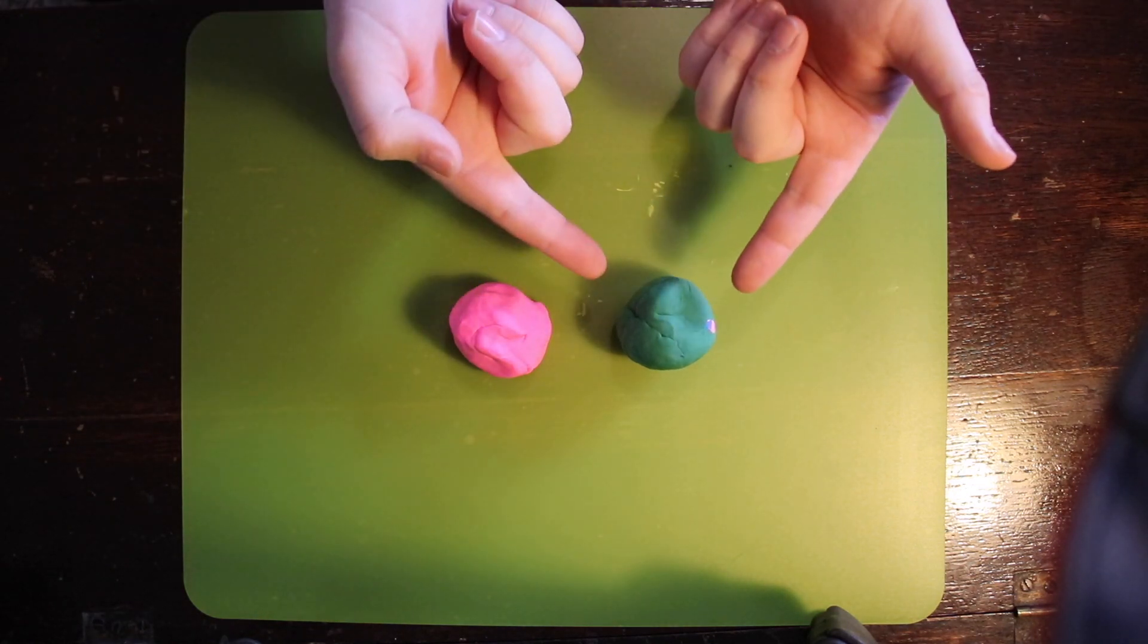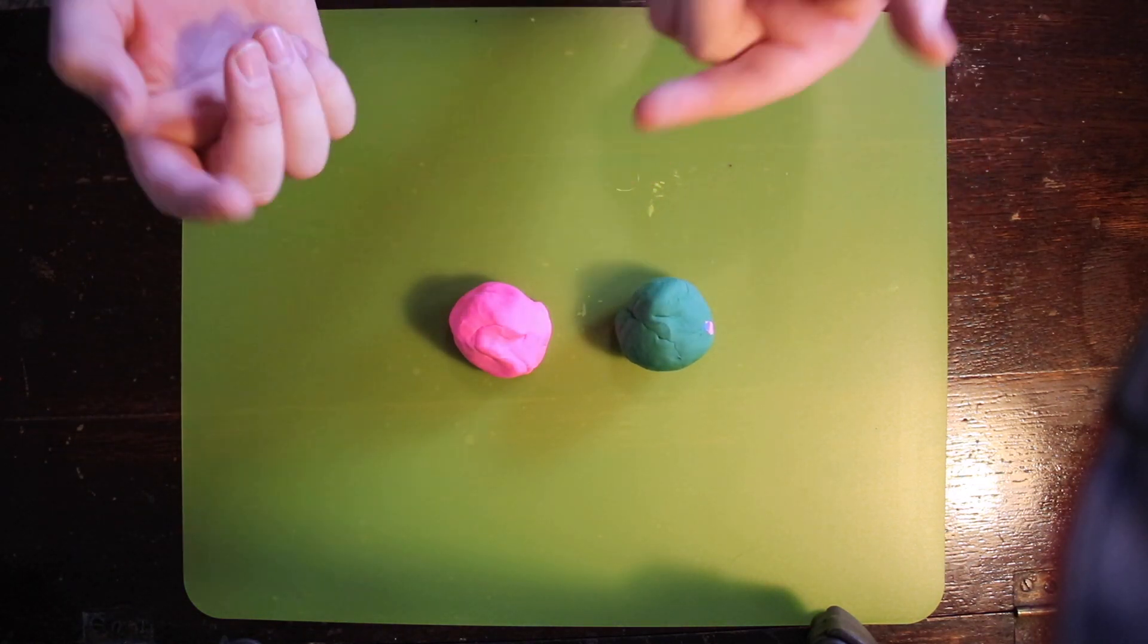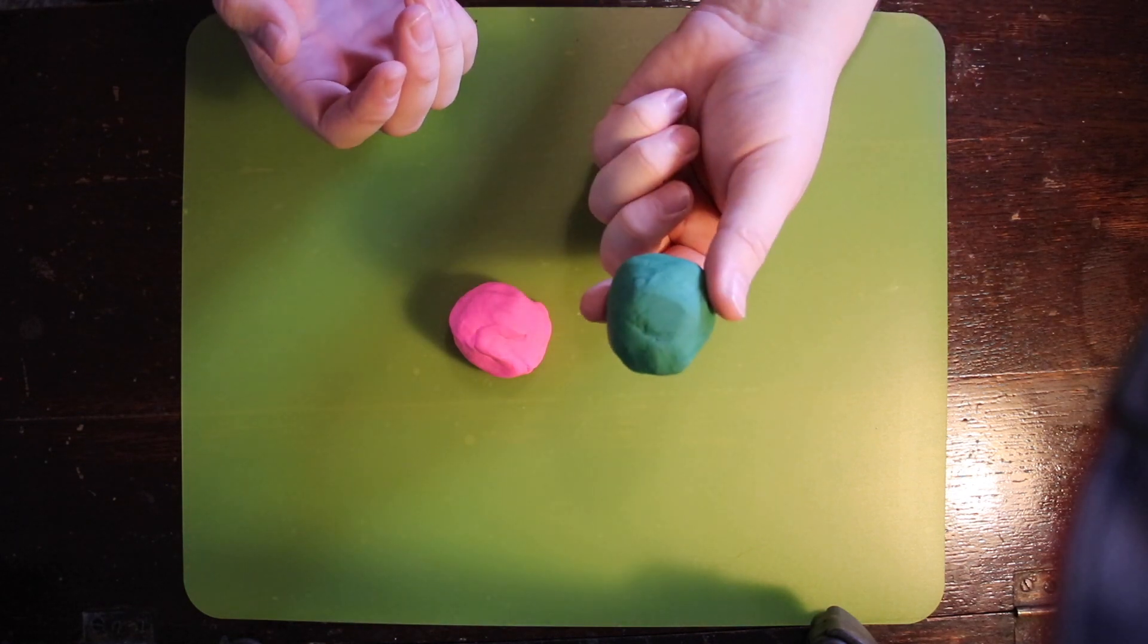So we got our two colors. I'll be making a green pinch pot with pink highlights. I'm going to be making my pinch pot a good size, so I'm going to use all of this clay.